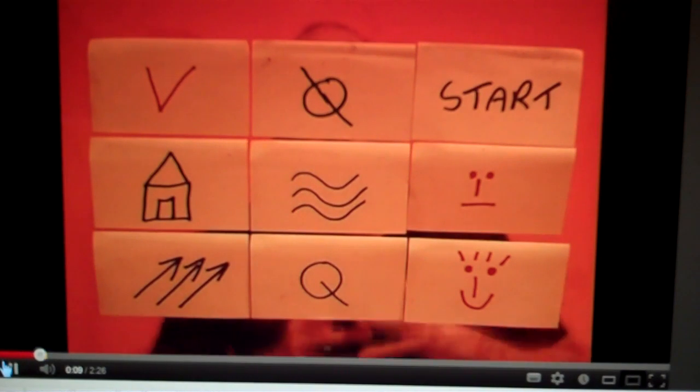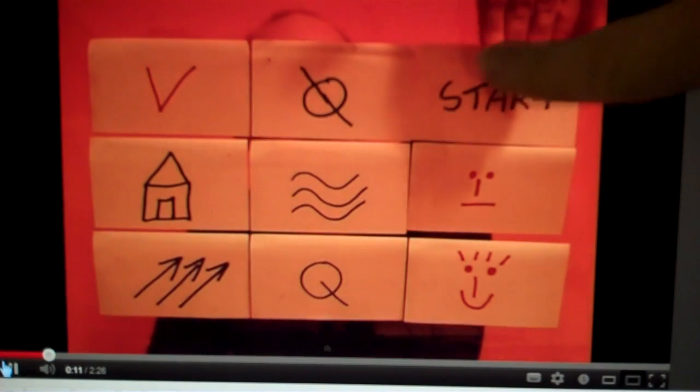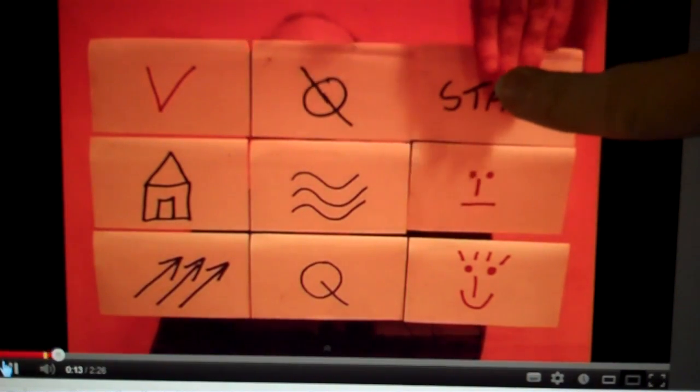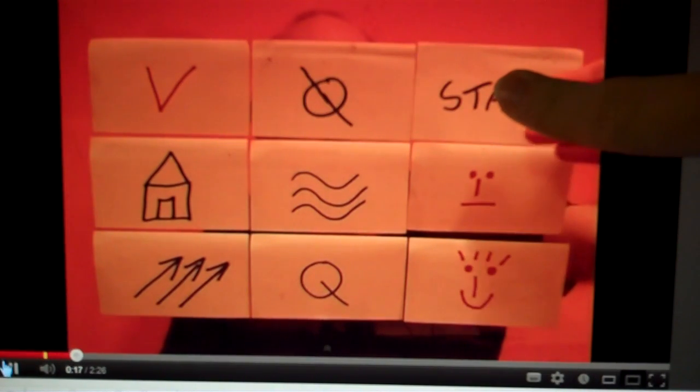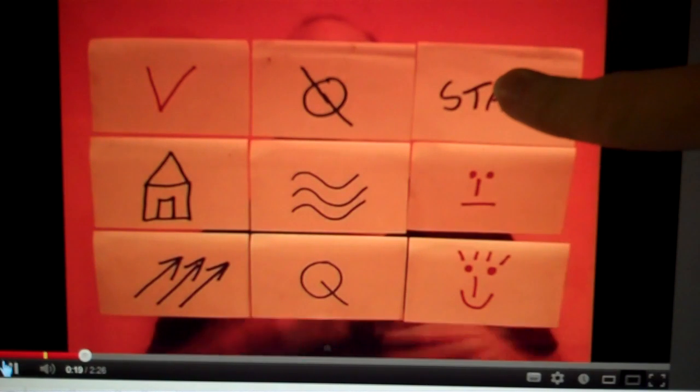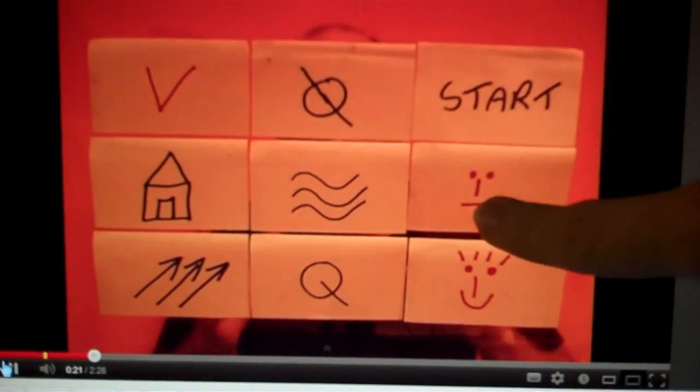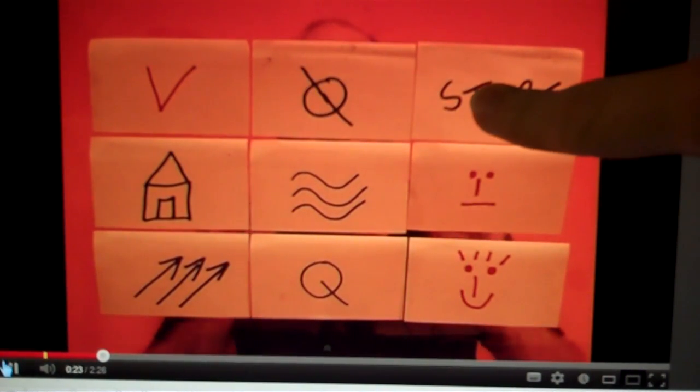What I'd like you to do is lean forward and place your finger on the start square here. Now during the test you can move from side to side. You can move up and down. You can visit a square that you've visited before but you mustn't move diagonally.